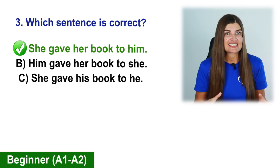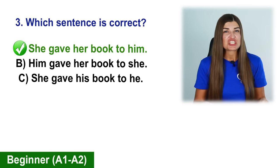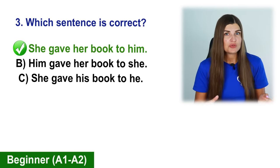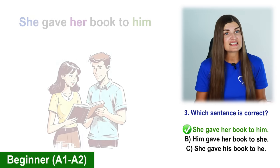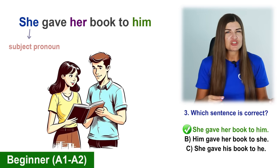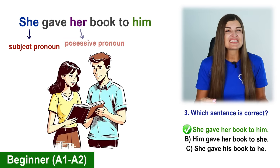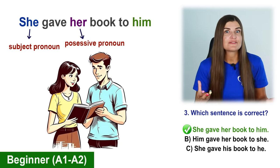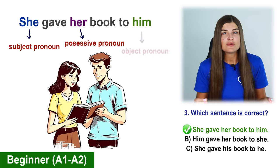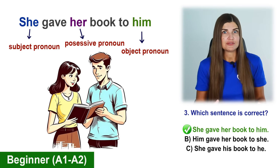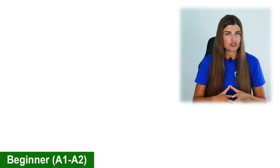The correct sentence is option A: She gave her book to him. In this sentence, she is the subject pronoun, her is the possessive pronoun, and him is the object pronoun.